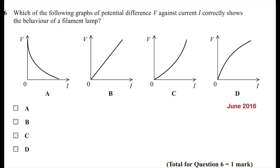Hi, in this question: which of the following graphs of potential difference V against current I correctly shows the behavior of a filament lamp? In Ohm's law, R equals V over I. We have to know that if you want to get a constant resistance...